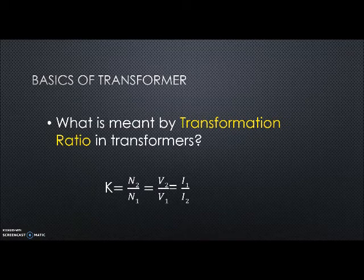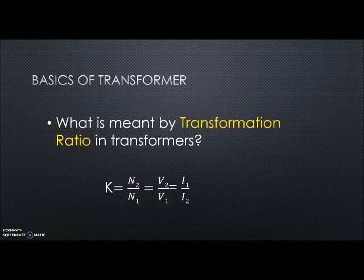It is nothing but the ratio of primary turn to the secondary turn, or sometimes it is given as primary voltage to the secondary voltage or secondary current to the primary current. Any of these ratios can be called transformation ratio.